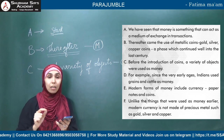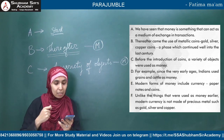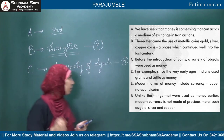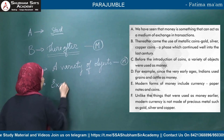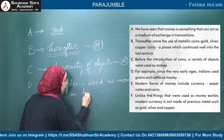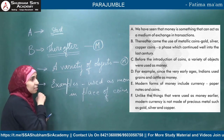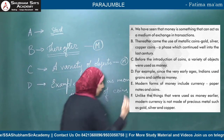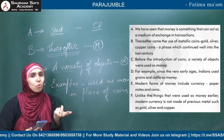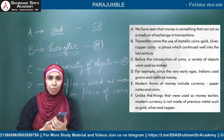Statement D: 'For example, since the very early ages, Indians used grains and cattle as money.' D is giving examples — grains and cattle used in place of coins. C said 'a variety of objects were used as money before coins,' and D gives examples of those objects. So C and D are a confirmed pair. C makes the statement, D gives the examples — this link is clear from reading alone.